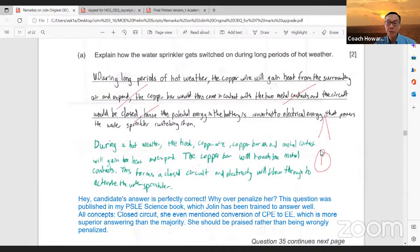This question was published in my PSLE science book. This student has been trained to answer well. In fact, all the concepts closed circuit. She even mentioned the conversion of chemical potential energy to electrical energy, which is more superior answering than the majority. I think this student should be praised rather than wrongly penalized.